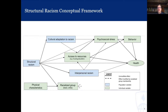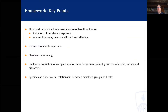Critically, racialized group membership is an interactor with the presence of structural racism to create some of these outcomes. The effect of structural racism is differential for Blacks and whites, which is not surprising because structural racism is a social system designed to channel resources to whites over Blacks. We're specifying no direct causal relationship between racialized group and health, which is really important if you go back to the idea of the lack of a biological basis for race.